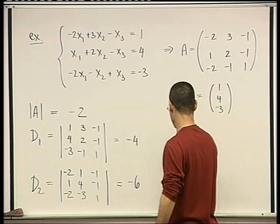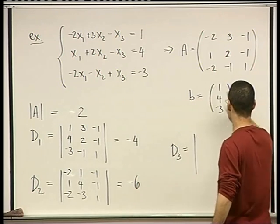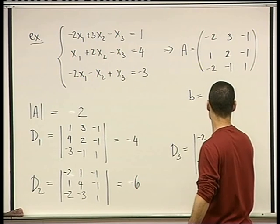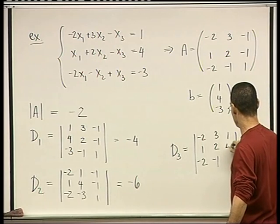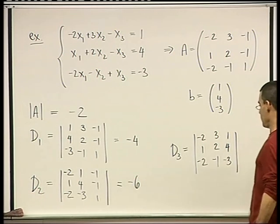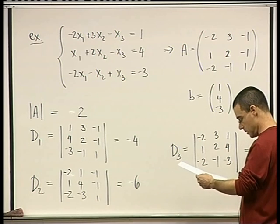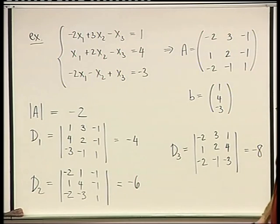And finally, D3 equals the determinant of the two original columns of A. And then the third column replaced with B. And what you get here is negative 8.